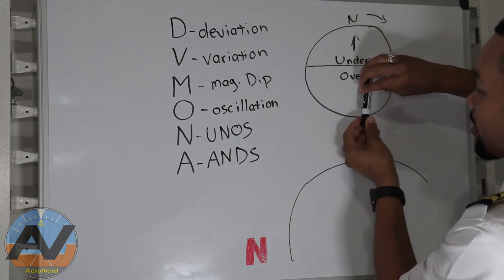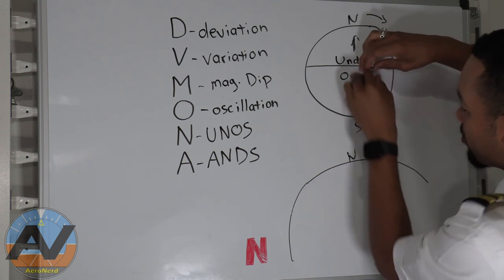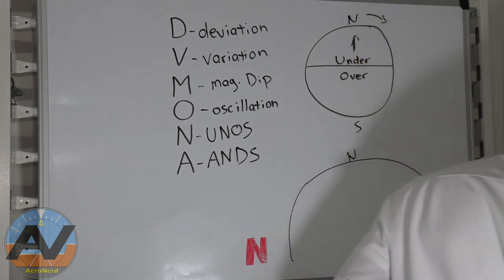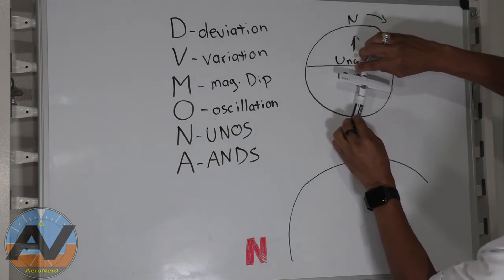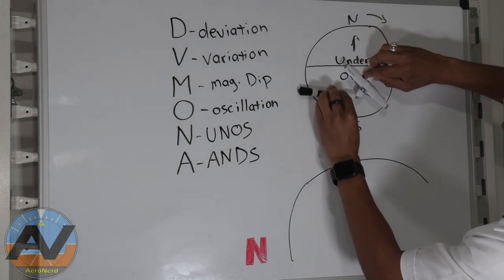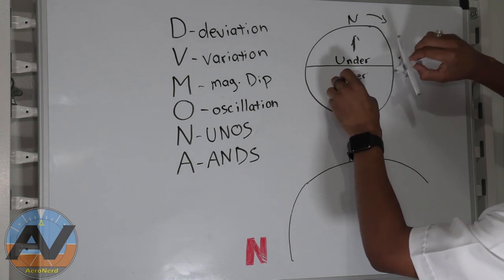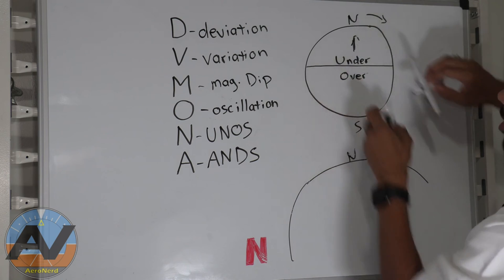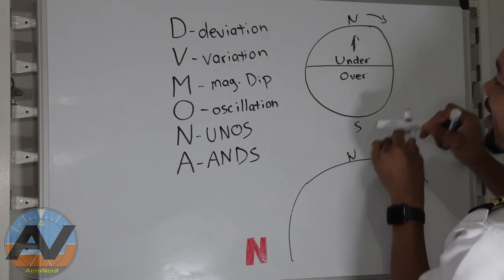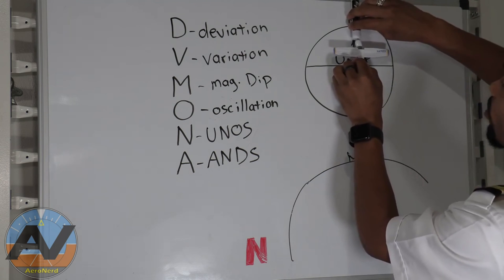So if you are flying north and you make a turn to the right, the compass is actually going, it's so attracted to the north. So here's north. It doesn't really want to go that way. It's attracted to the north all the time. So when you turn this way, it's actually going to turn slower than the actual airplane itself.